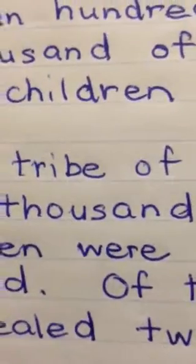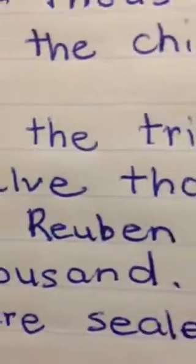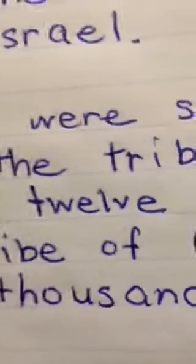Of the tribe of Judah were sealed 12,000. Of the tribe of Reuben were sealed 12,000. Of the tribe of Gad were sealed 12,000.